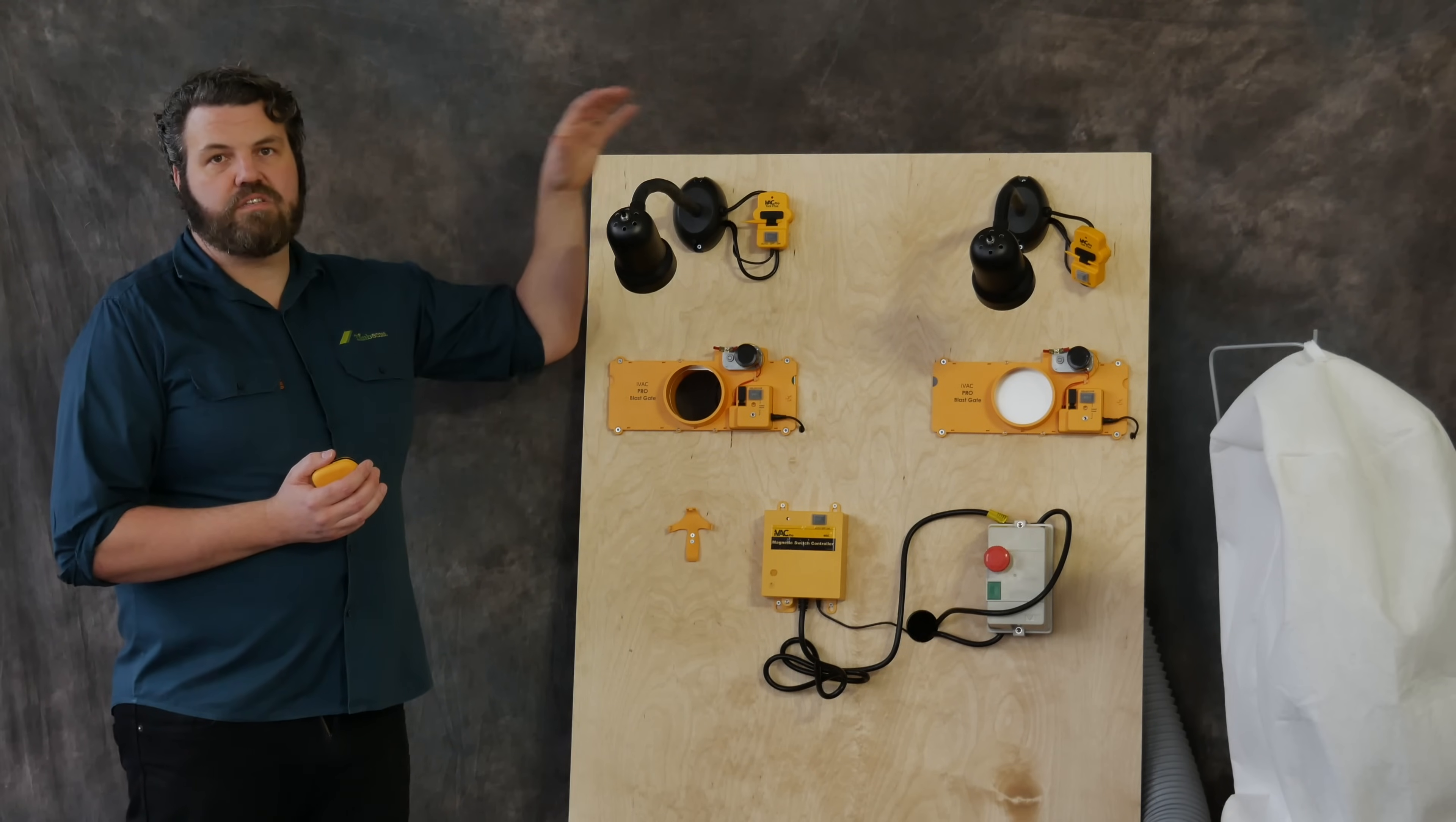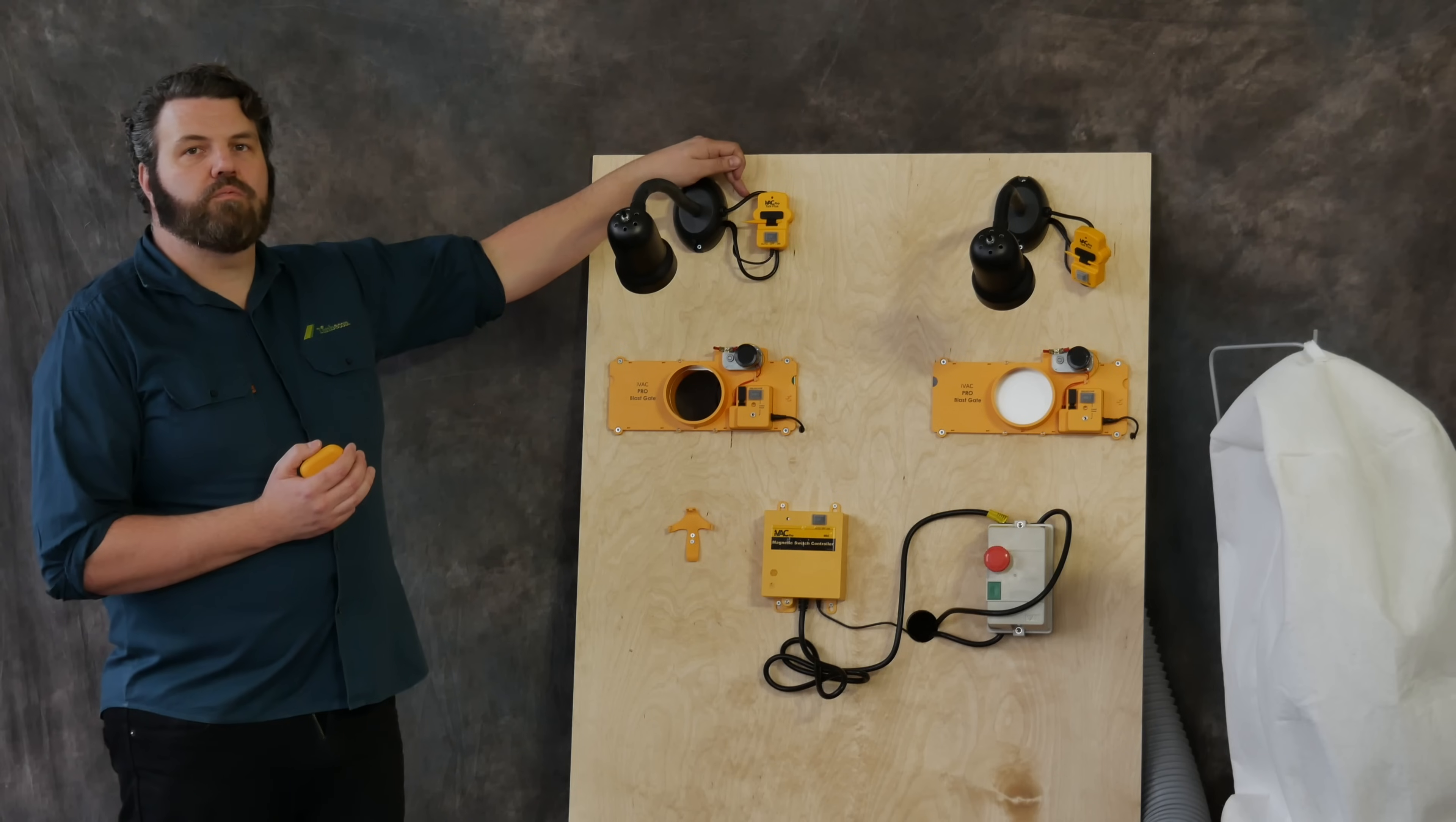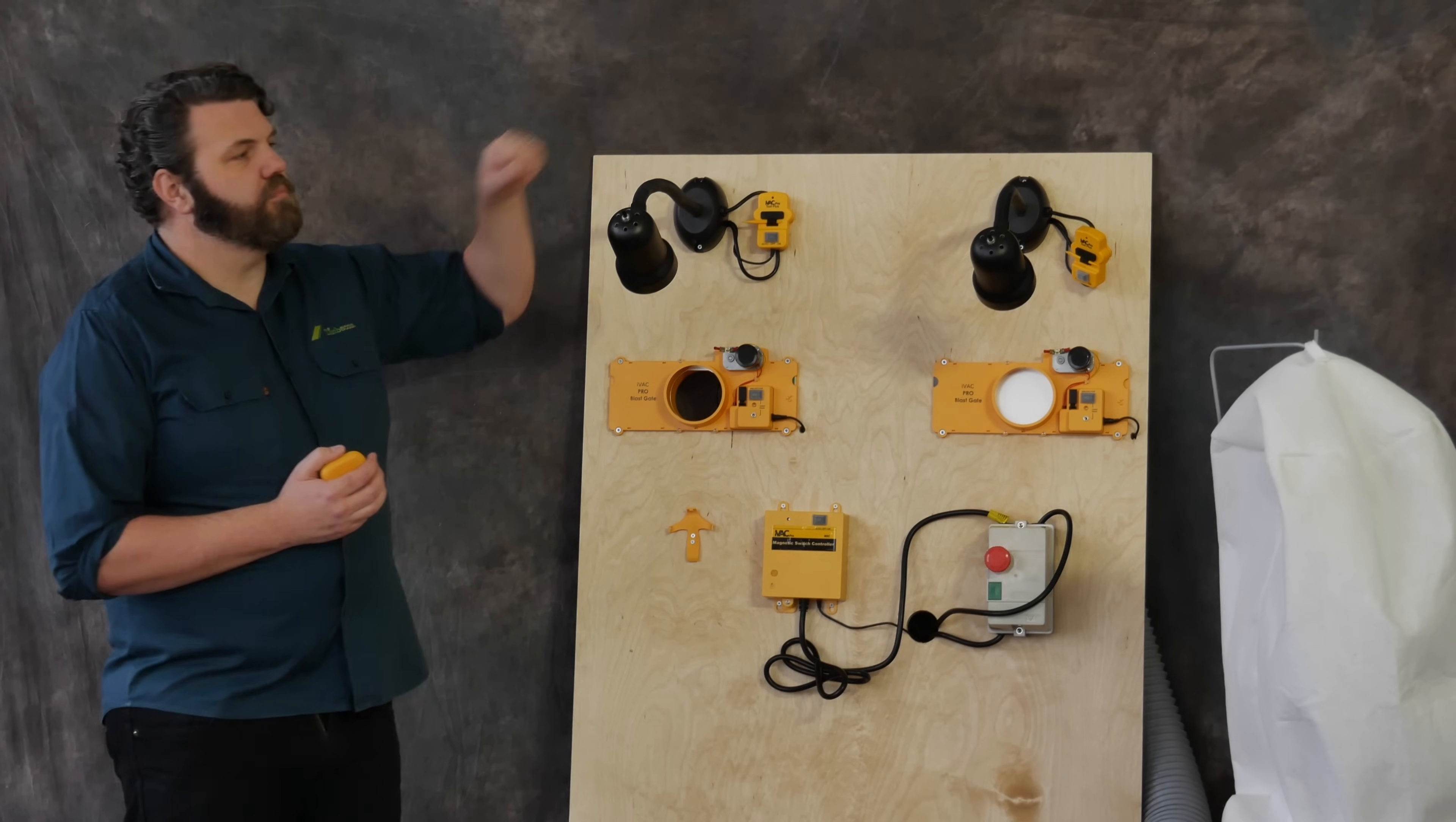These lights here are designed to simulate what happens when you turn a power tool on. The way it works is when you turn on any of your power tools, there's an electrical current that runs through the cord, and the tool plus picks up that electrical current. When it picks up the electrical current, it knows that the power tool's being turned on, and this is where the beauty of the system comes in.